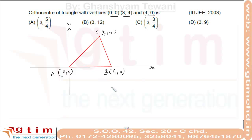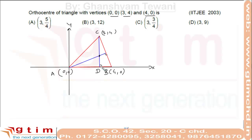The orthocenter is the point of concurrency of altitudes. So let's drop altitudes from vertices to the opposite sides to get the orthocenter. We need to find only two altitudes — their point of intersection is the orthocenter. Now CD is a vertical line.